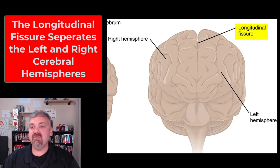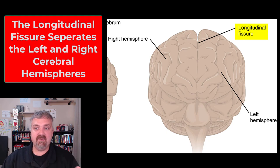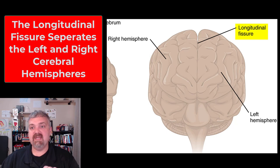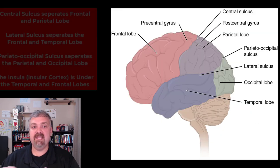Here we can see that longitudinal fissure — that deep groove in the middle that separates the right and left cerebral hemispheres. We'll talk about the corpus callosum and the internal structures that connect them in another video.